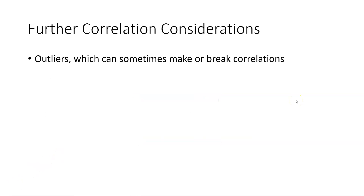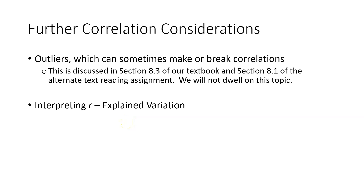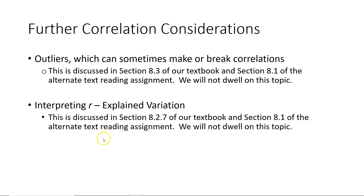I want to briefly mention two further correlation considerations. The first is outliers — data values that can sometimes make or break linear correlations, discussed in Section 8.3 of our textbook and Section 8.1 of the alternate text. The second is interpreting the linear correlation coefficient using what is called explained variation, discussed in Section 8.2.7 of our textbook and Section 8.1 of the alternate text.